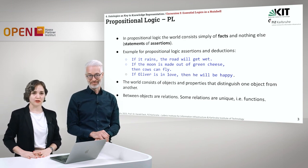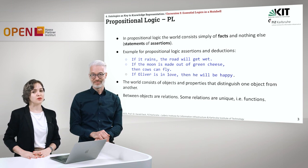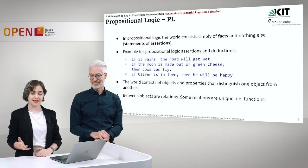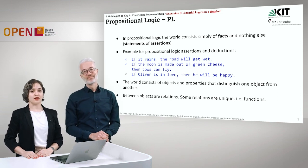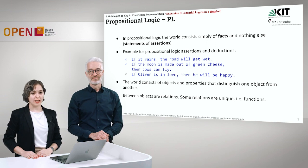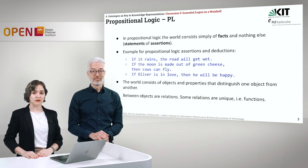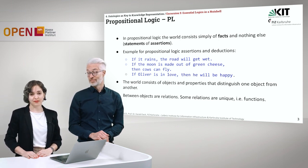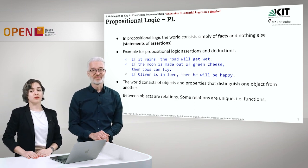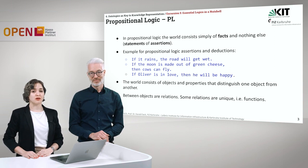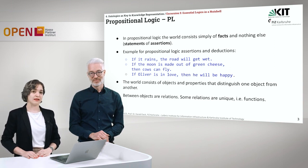As mentioned, we are going to go over a recap of propositional logic. In propositional logic, the world mostly consists of facts and nothing else. These facts are also the so-called statements or assertions. Some examples: if it rains, the road will get wet; if the moon is made out of green cheese, then cows can fly; if Oliver is in love, then he will be happy. All these examples are given in natural language, but propositional logic has the possibility to formalize these natural language statements in a way that they are machine understandable.